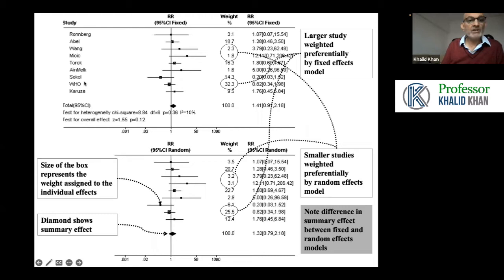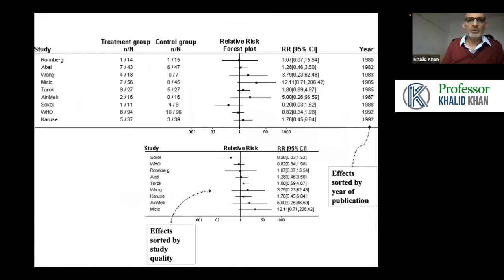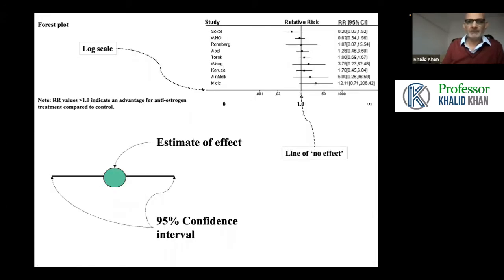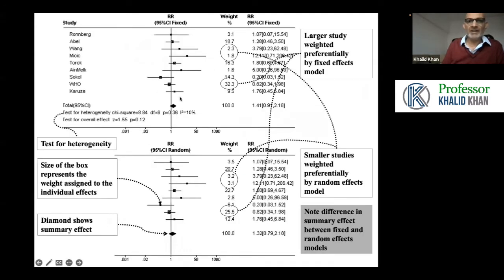In data extraction, you need the results of the study. What you need when extracting data is this information: for example, 1 out of 14 in the treatment group, 1 out of 15 in the control group, and so on per study. From this data, we can calculate relative risk and confidence interval. We can then put this information into a meta-analysis model, depending on whether we use a fixed effect or random effect model, and we can create this diamond. This diamond is the sum of the individual results weighted according to a formula for the width of the confidence interval.